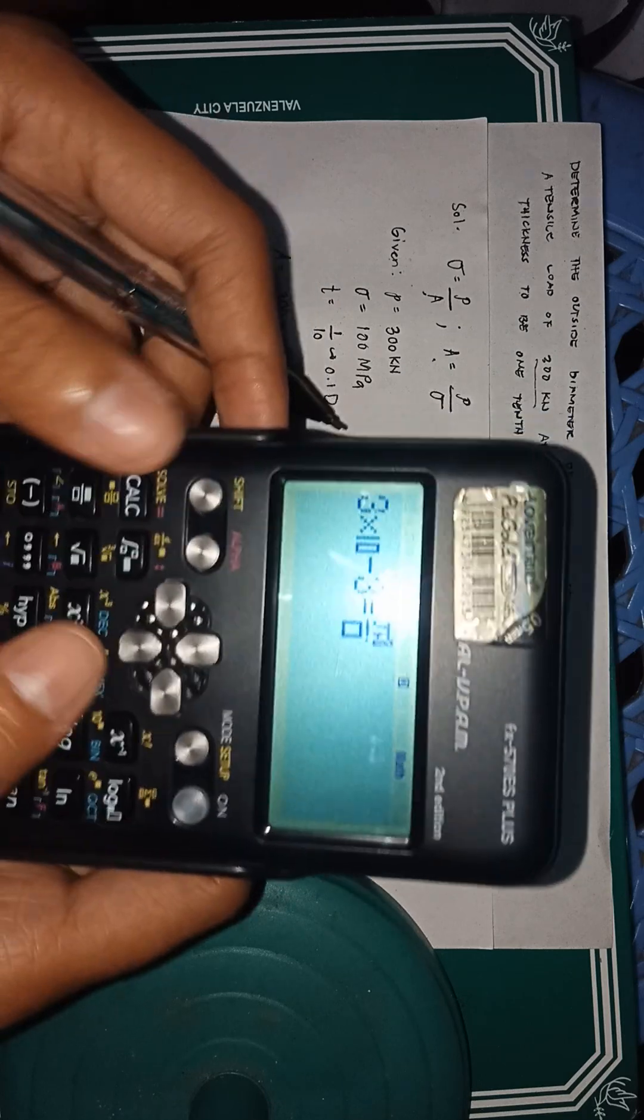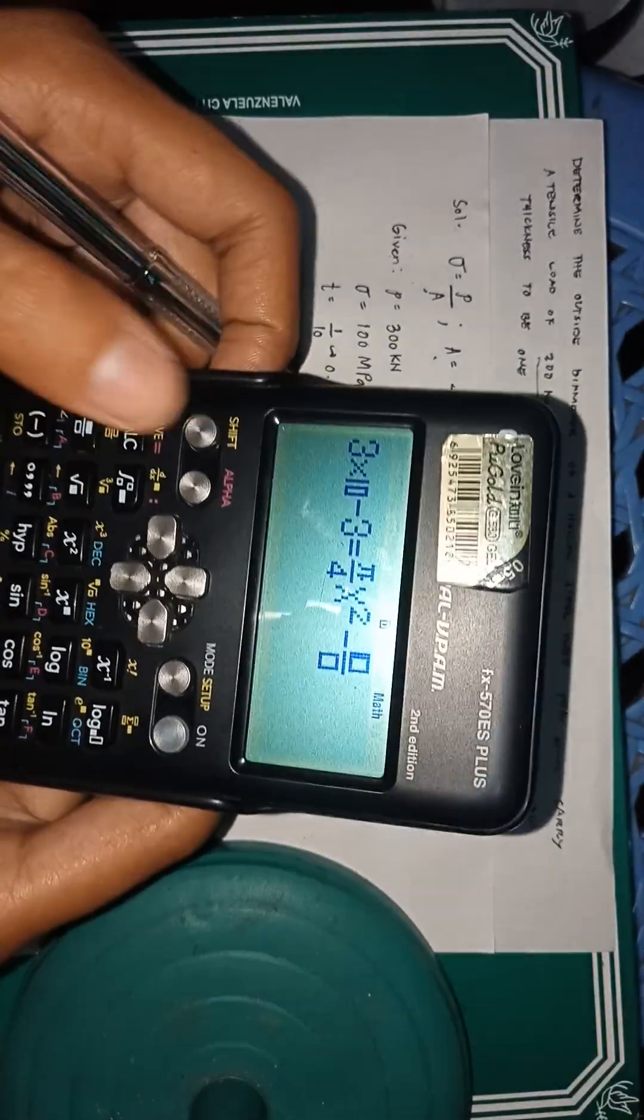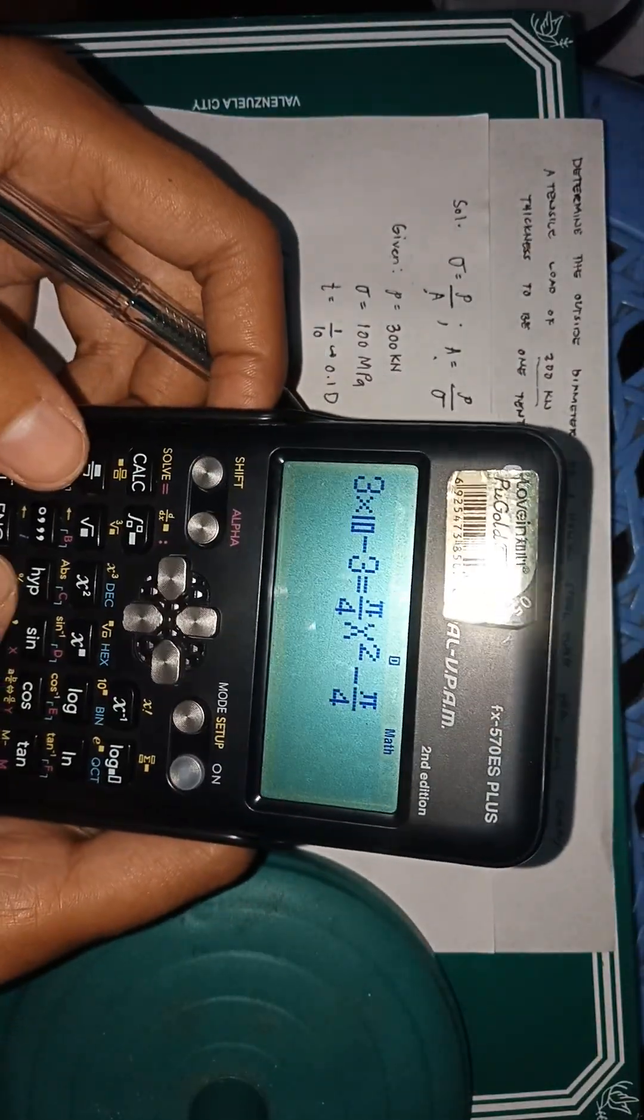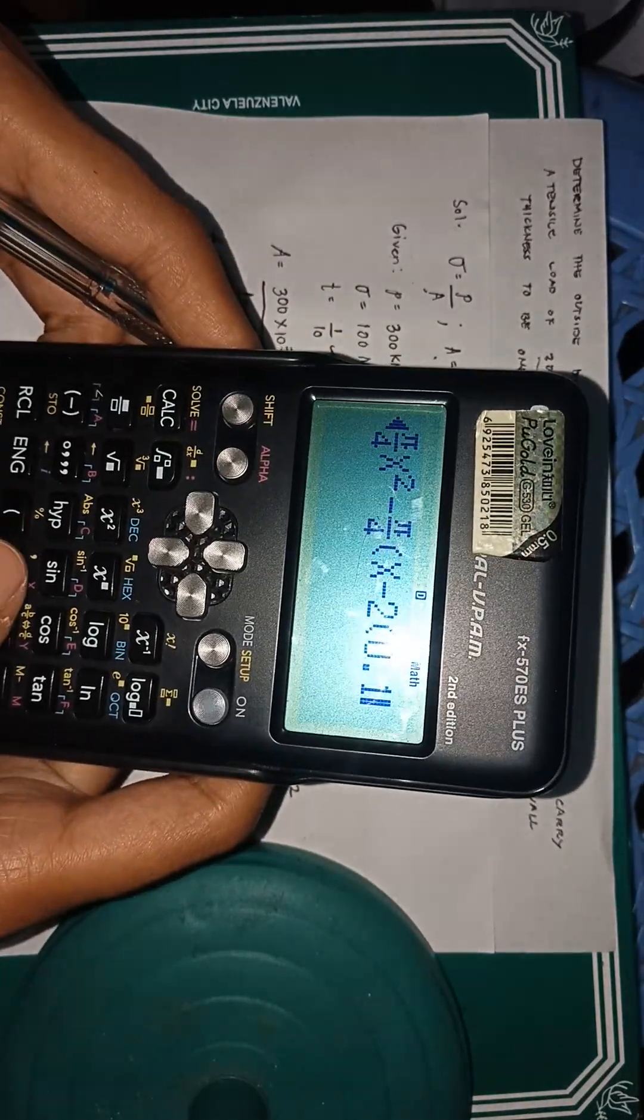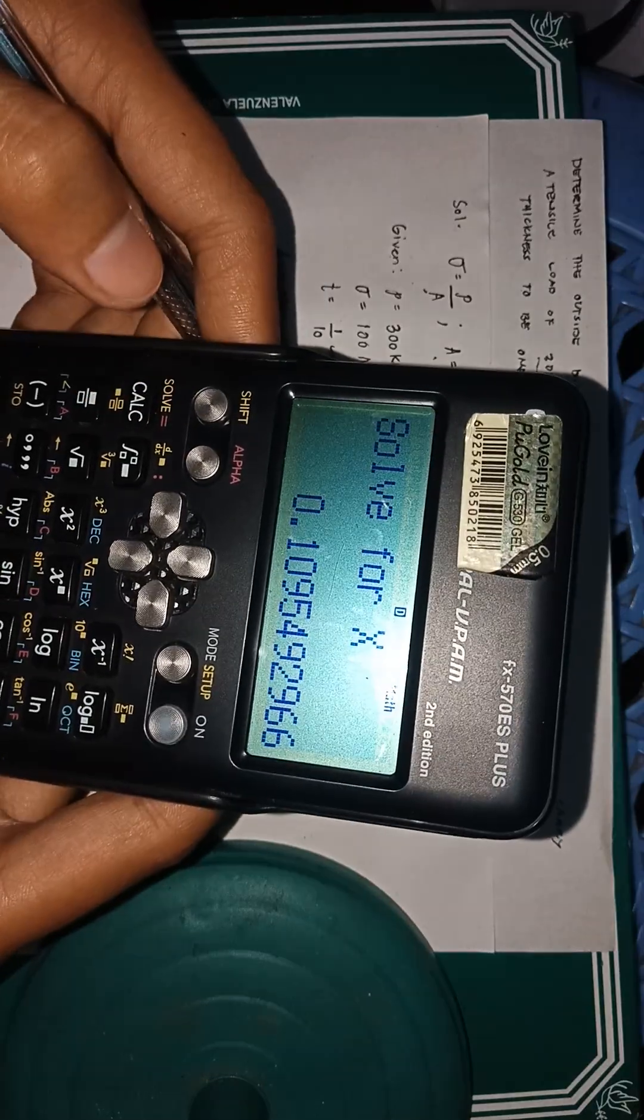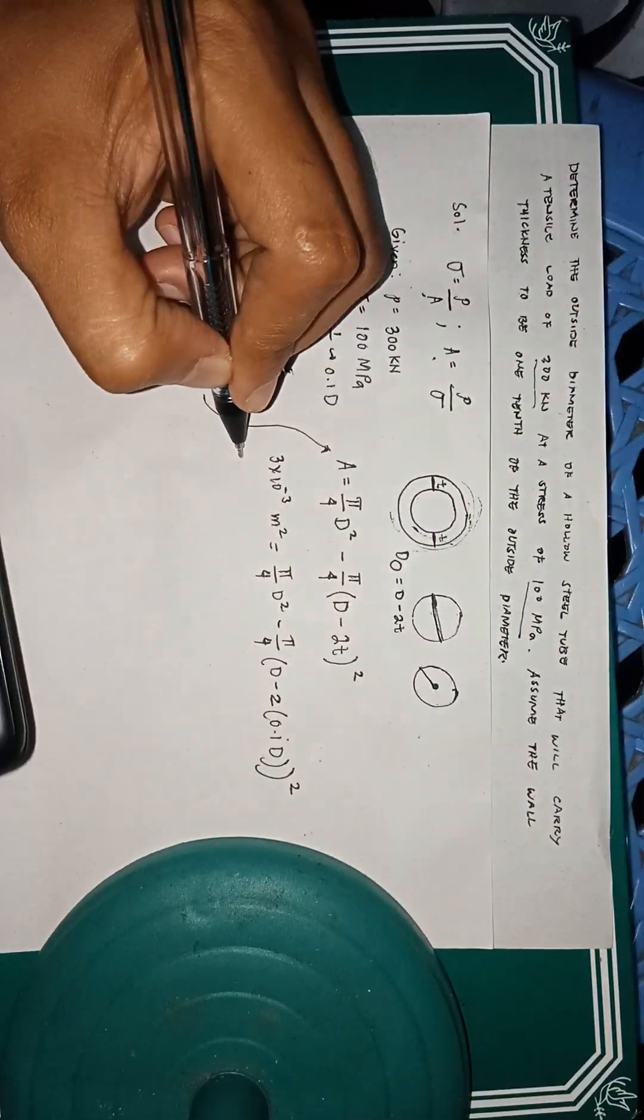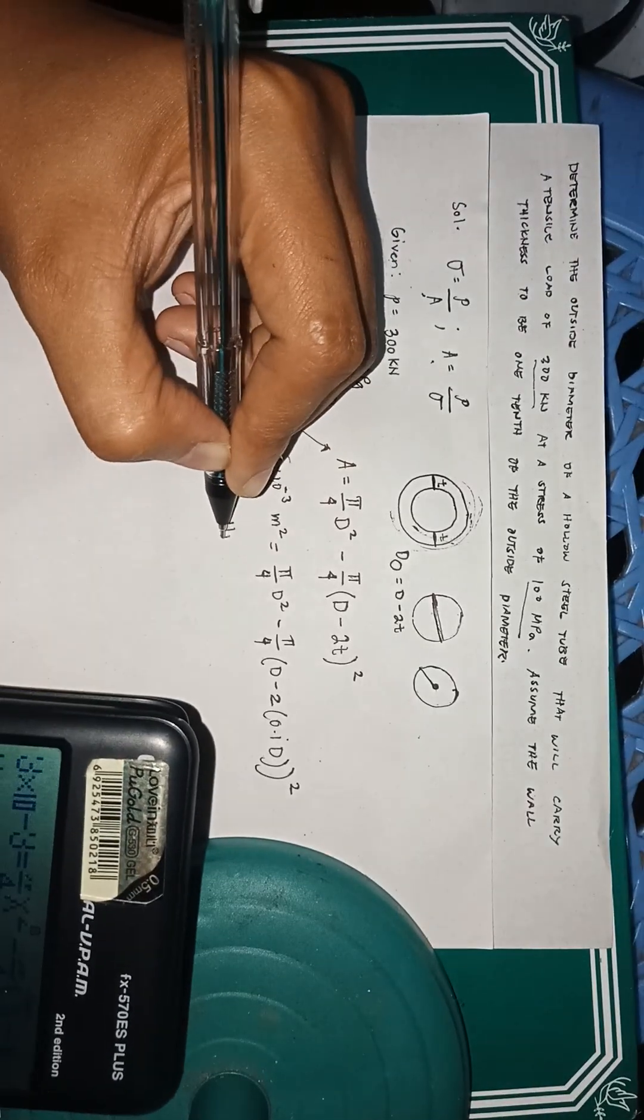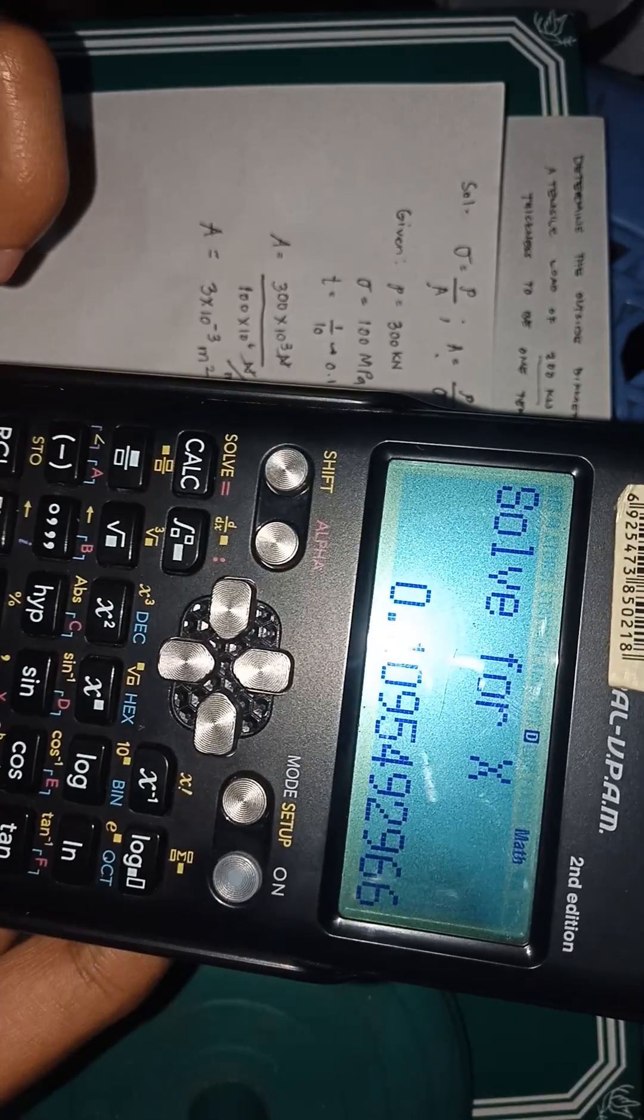So 4x, click your equals. This is your answer. Diameter is equals to 0.11 meters, or if we'll say in millimeters.